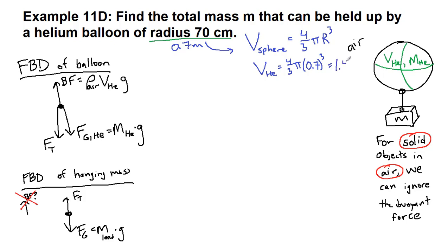We get 1.44 cubic meters. So it's quite a big balloon. And now we also want to recognize that we can look up the density of helium. That density of helium is 0.179 kilograms per cubic meter.